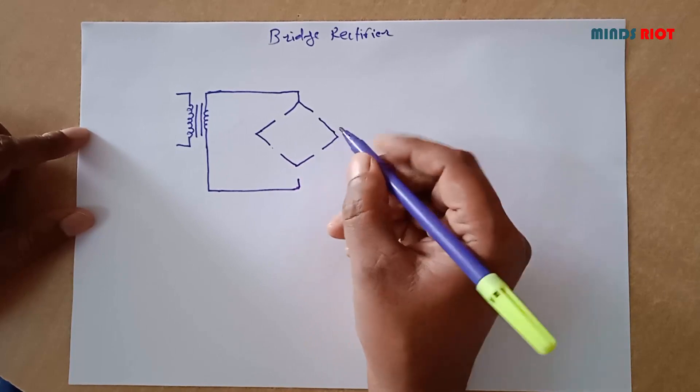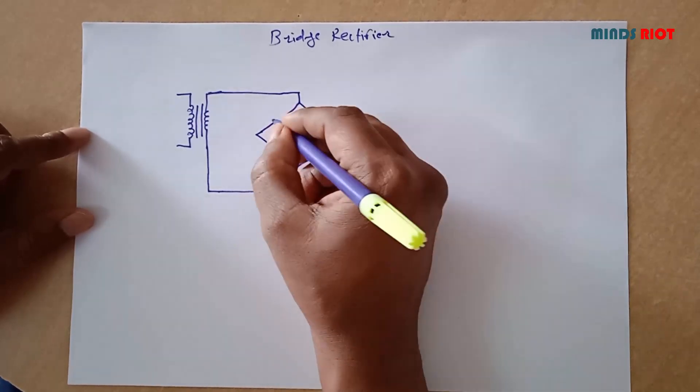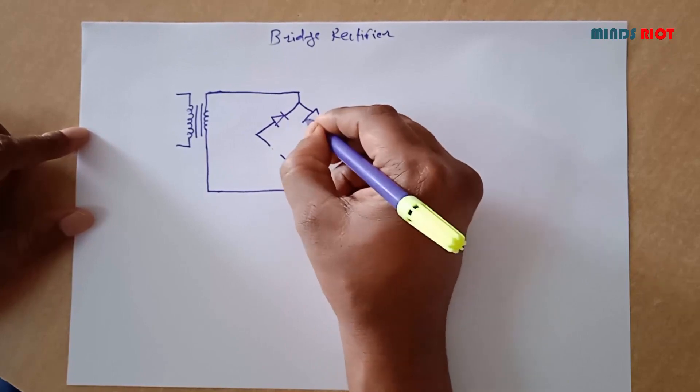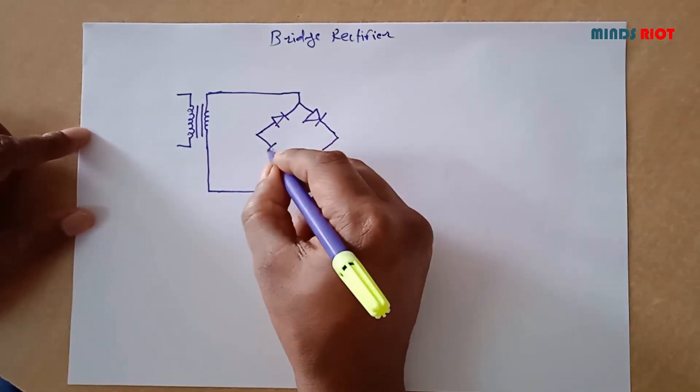Generally in conventional diagrams students get confused in the direction of diodes. Hence, I am going to draw a second diagram which is a simplified one.